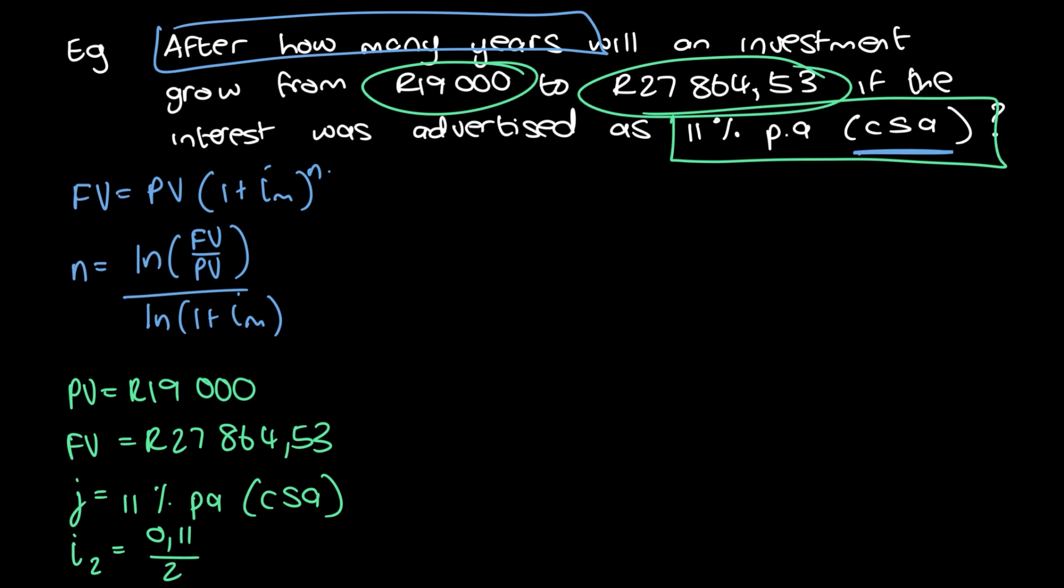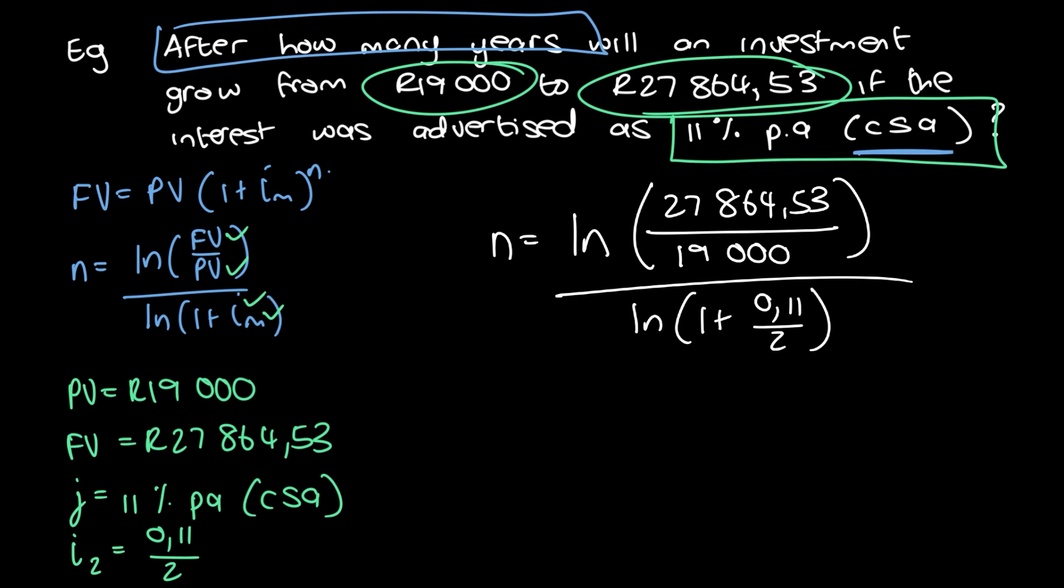Now we've written down everything that we know. Let's see if we have everything for our formula. We have FV, PV, i, and m, so we're sorted. We can now just plug and play into the formula. We have n equals ln(27,864.53/19,000) divided by ln(1 + 0.11/2). That's going to give us 7.15 half years. Why is it half years? Because once again, the n and the m need to coincide. This unit has to match with that unit by the m.